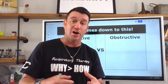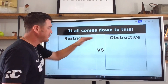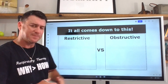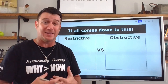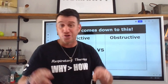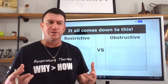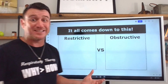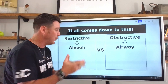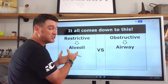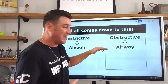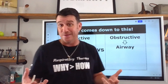Restrictive lung diseases have a hard time getting air in. Obstructive lung diseases have a hard time getting air out — two different things. Restrictive lung diseases impact the functional units, being the alveoli. Obstructive lung diseases affect the airways. That's really what it all comes down to.